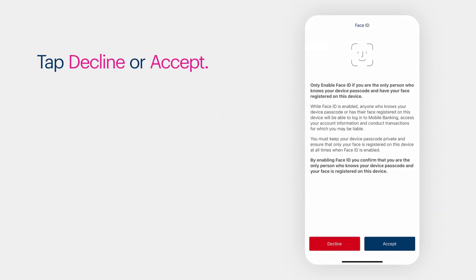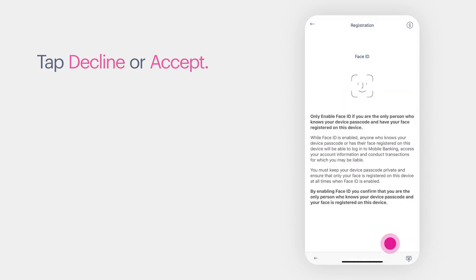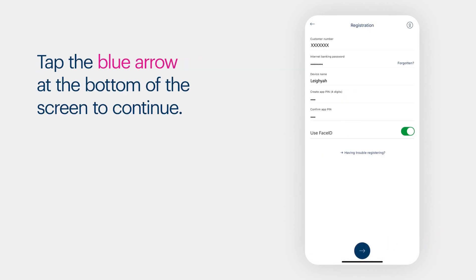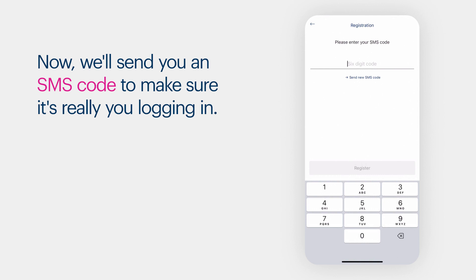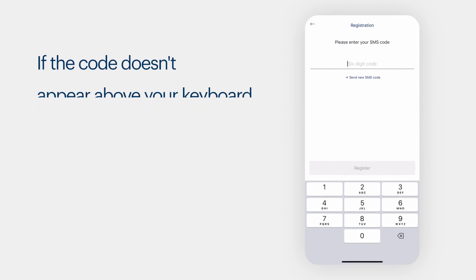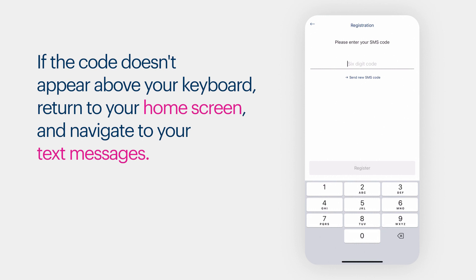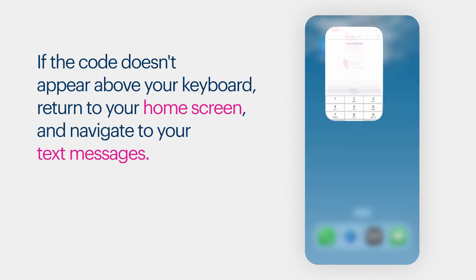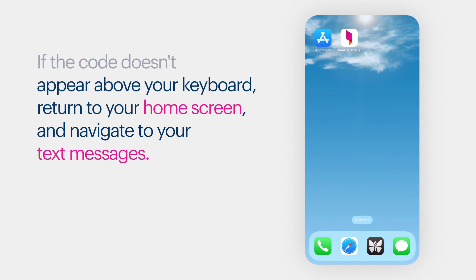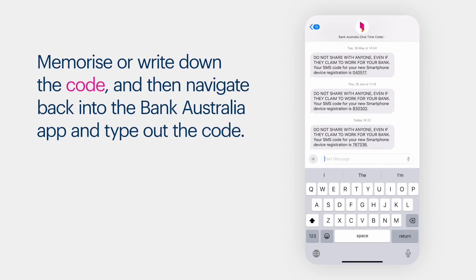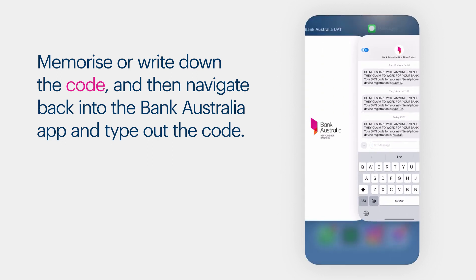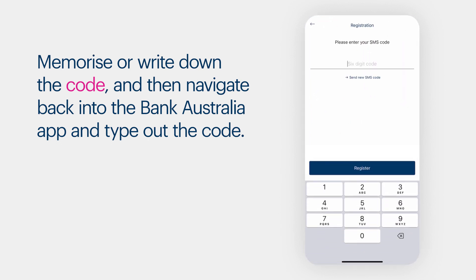Tap Decline or Accept. Tap the blue arrow at the bottom of the screen to continue. Now we'll send you an SMS code to make sure it's really you logging in. If the code doesn't appear above your keyboard, return to your home screen and navigate to your text messages. Memorise or write down the code, then navigate back into the Bank Australia app and type out the code.